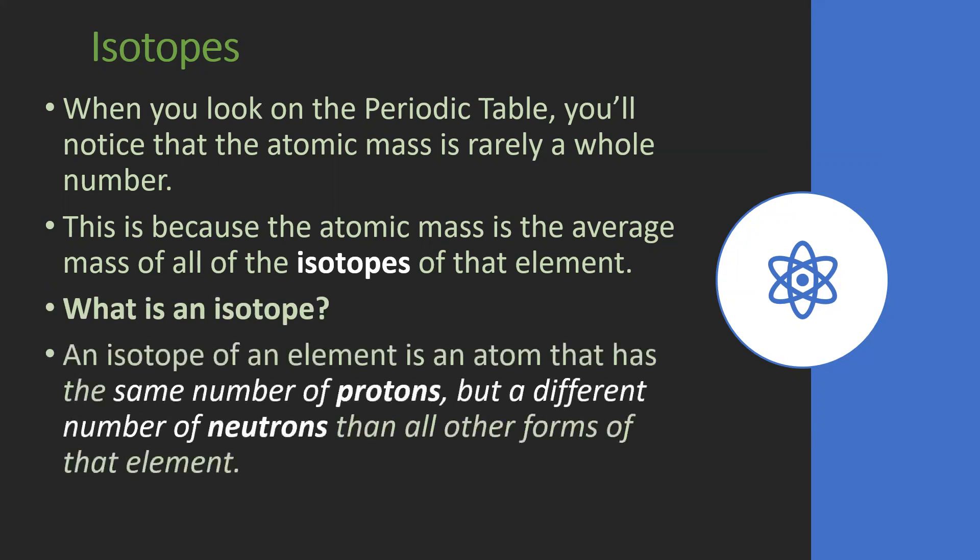So we can define an isotope as an atom that has the same number of protons but different number of neutrons than all other forms of that element. Keep in mind protons give us the identity of the element, but elements can have a different number of neutrons, and both of these are in the nucleus.